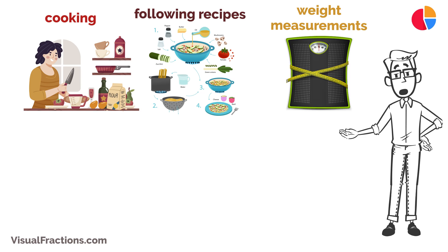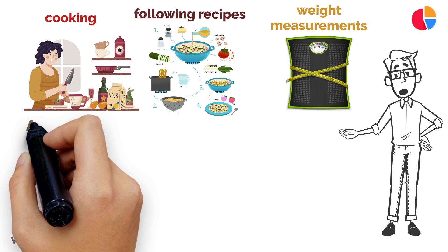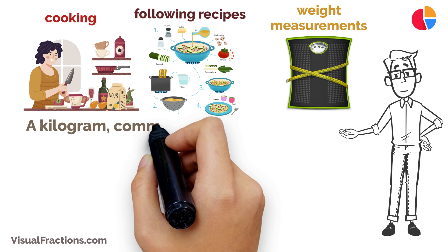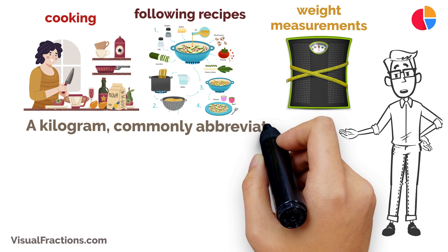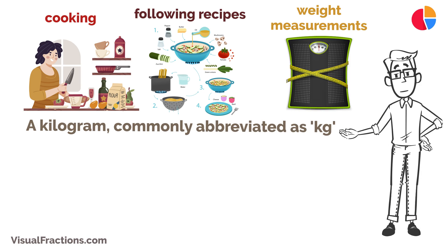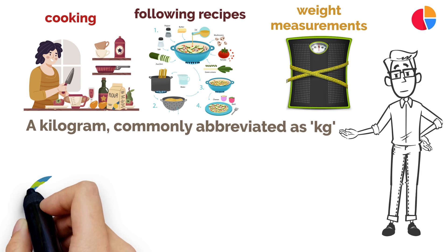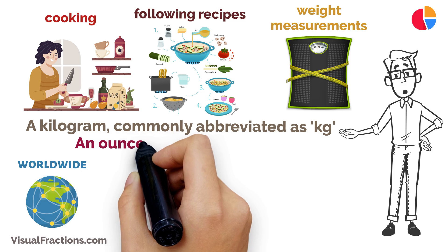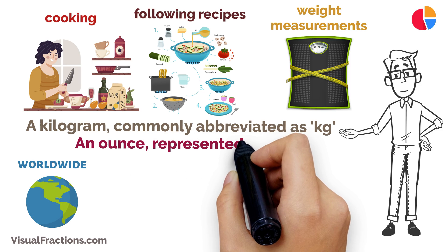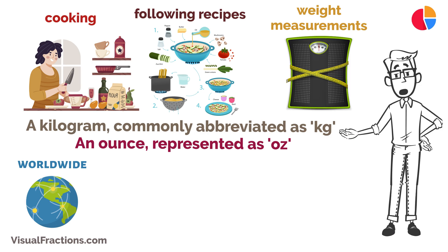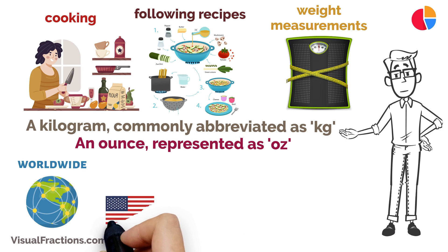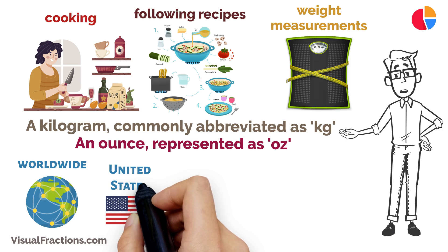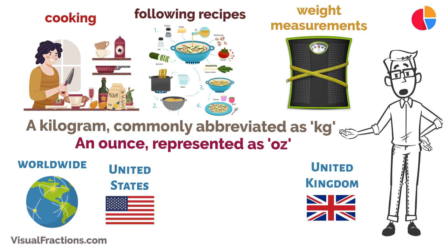Let's start with the basics. A kilogram, commonly abbreviated as kg, is a standard unit of mass used worldwide. An ounce, represented as oz, is a smaller unit of weight commonly used in the United States and the United Kingdom.